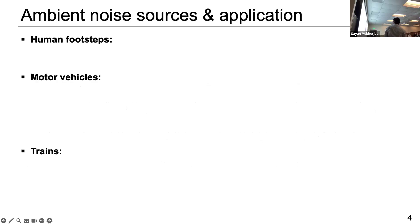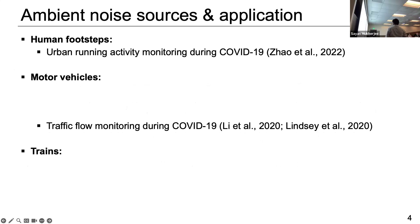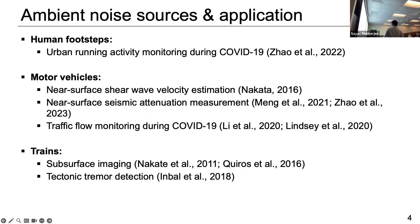Researchers have used different ambient sources like human footsteps, motor vehicles, and trains. They have done an array of research monitoring above-ground activities like urban running activity, traffic flow monitoring during COVID, and also below-surface applications like near-surface velocity estimation, attenuation measurement, subsurface imaging, and tectonic tremor detection.